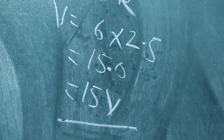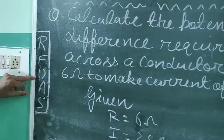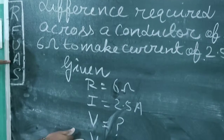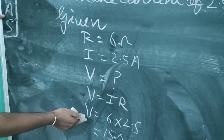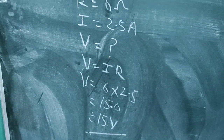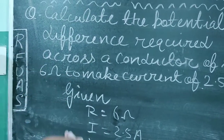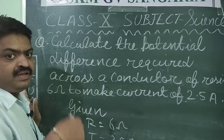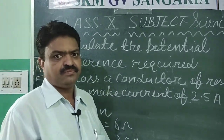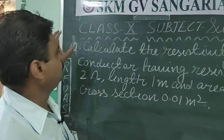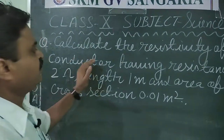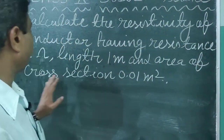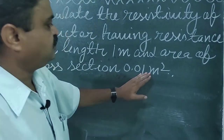So, to solve the question: first read, second find the quantities, third understand the question, then apply the formula, put all the quantities in, and solve it. Now we will solve the next question: Calculate the resistivity of a conductor having resistance 2 ohm, length 1 meter, and area of cross-section 0.01 meter square.